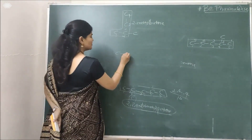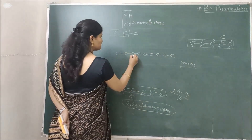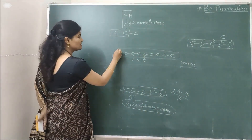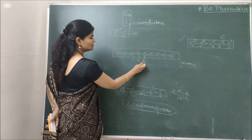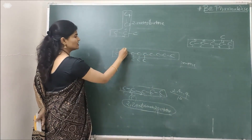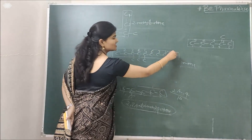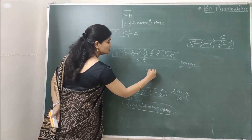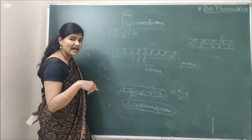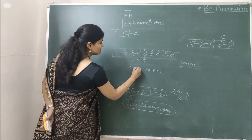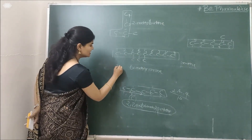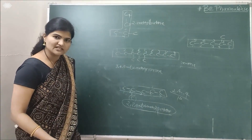Next example: a 9-carbon chain (nonane) with 3 methyl substituents. From the left, the locants are 3, 4, 5; from the right they would be 5, 6, 7. We number from the left. The substituents are the same (all methyl), so we use the prefix tri. We write all three locants: 3, 4, 5. The name becomes 3,4,5-trimethylnonane.